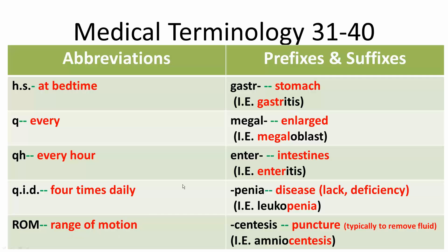Now for the prefixes and suffixes. We have gastro, that's stomach — gastritis means inflammation of the stomach. We have megal, meaning enlarged — megaloblast refers to enlarged red blood cells.